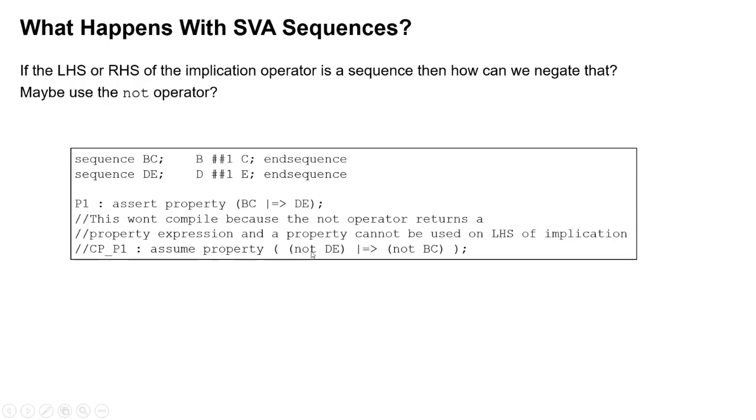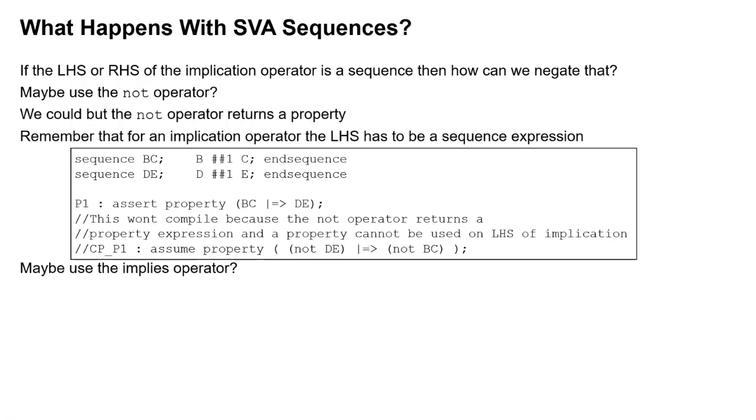Now the problem with this is NOT DE will return a property expression and property expressions are not allowed on the left hand side of an implication operator. It has to be a sequence or a boolean. So that will not succeed. And maybe we would think of another SVA operator called the implies operator. Will that work? Well, no, not really because implies each property or operand has to start at the same time.